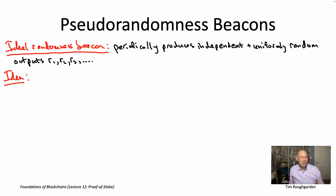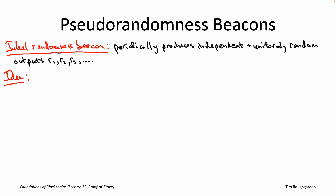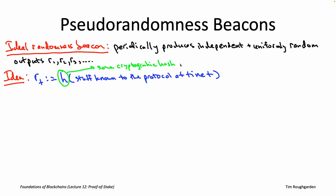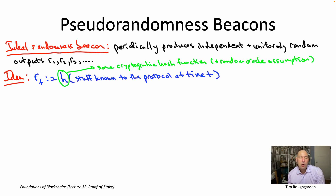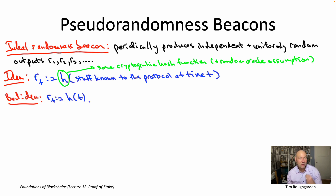So why not just pick your favorite cryptographic hash function for which you're comfortable making the random oracle assumption, and interpret its output as random bits? There is the question of what you're hashing — what's the input to the hash function? And as we've discussed, that has to come from the hermetically sealed environment: something the blockchain protocol knows about at the time it's evaluating the hash function. So what's known to the protocol at time t? Well, perhaps most simply, the time step itself.